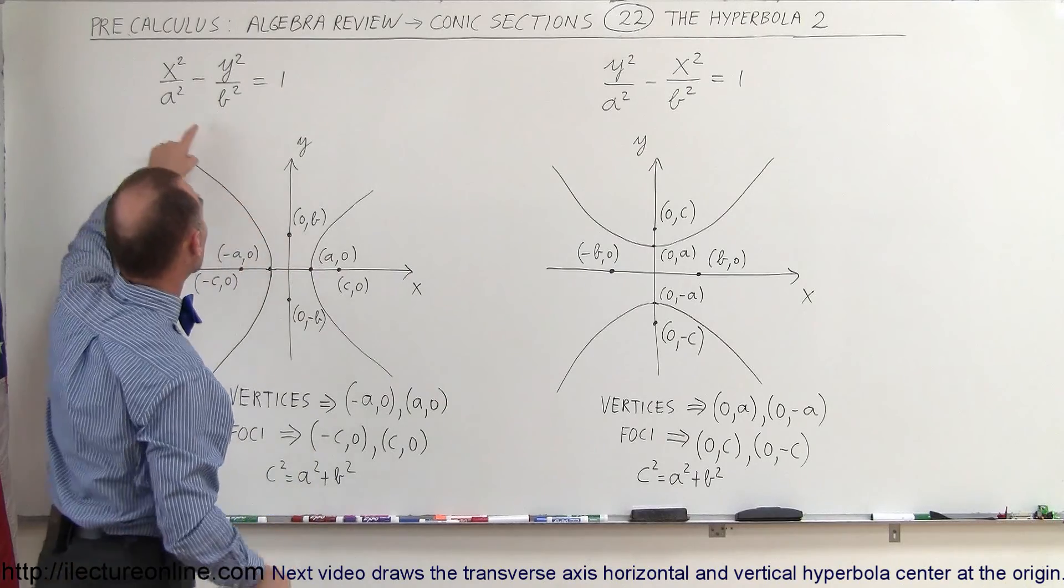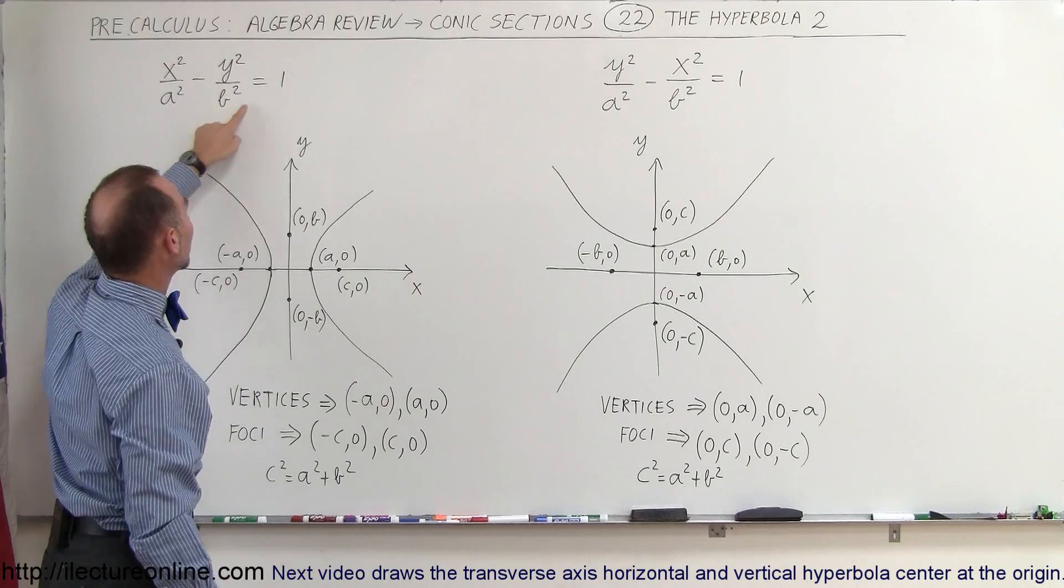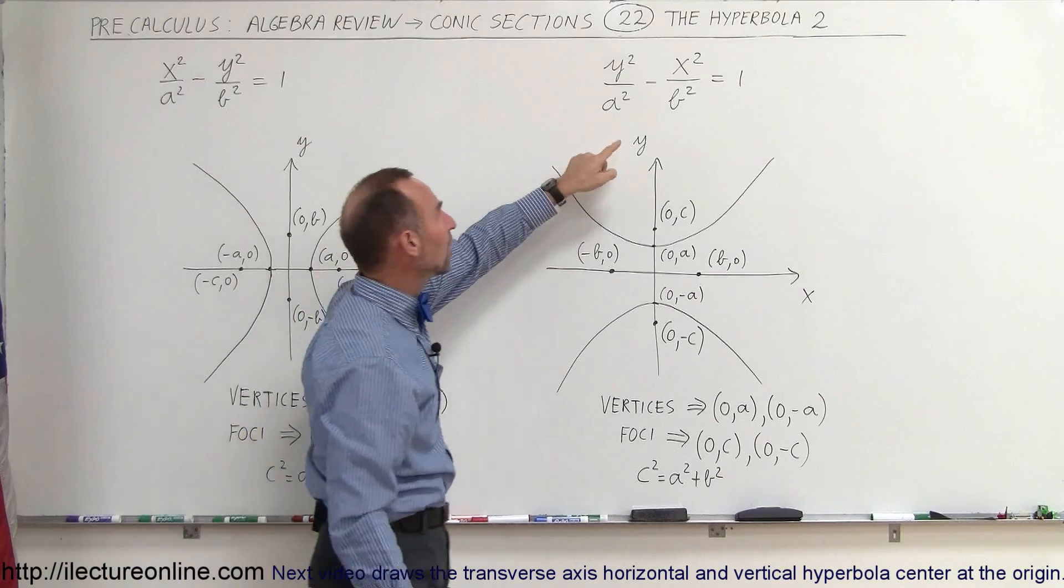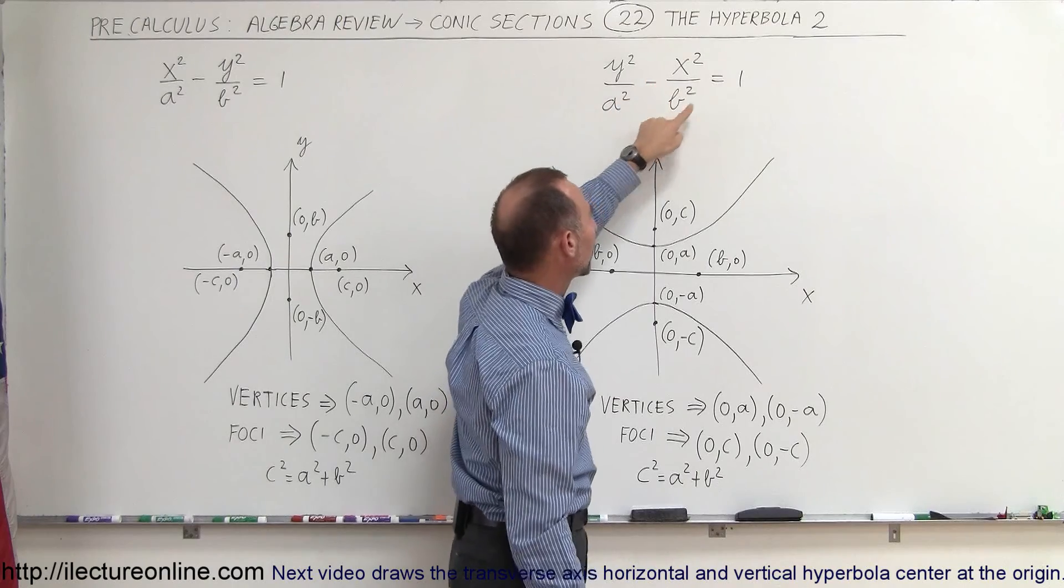Well, take a look at the general equation. Here we have written x squared divided by a squared minus y squared divided by b squared equals 1, and here the equation is y squared divided by a squared minus x squared divided by b squared equals 1.